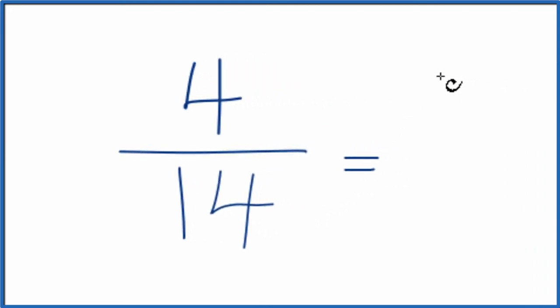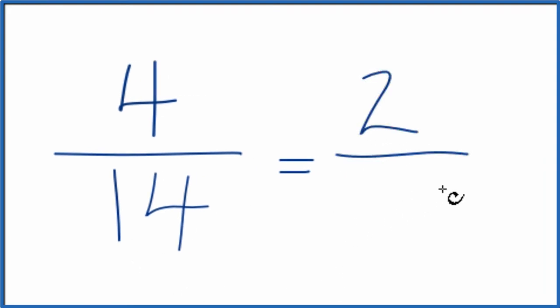Because 4 divided by 2, that gives us 2. 14 divided by 2 is 7. 7 times 2 is 14.